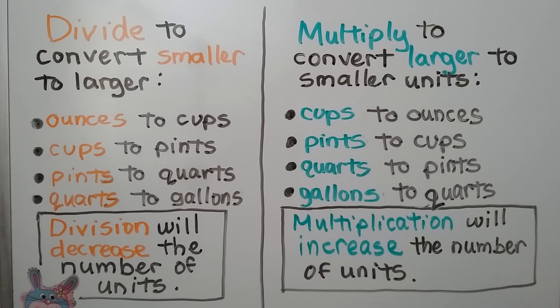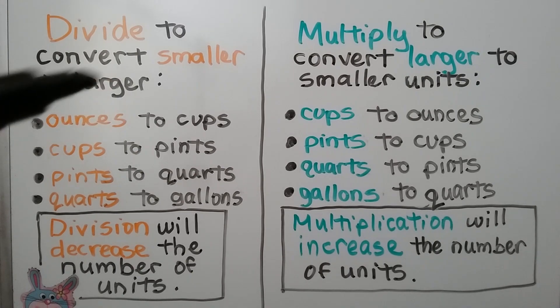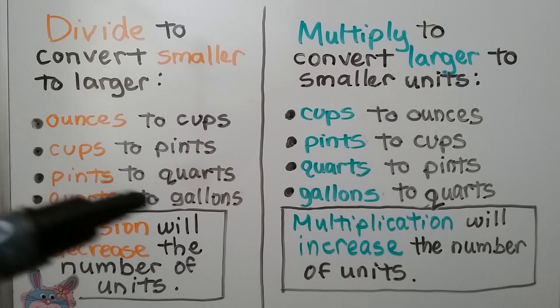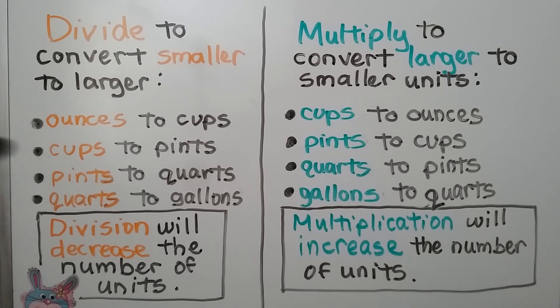We divide to convert smaller to larger units. Going from ounces to cups, cups to pints, pints to quarts, or quarts to gallons, we are going to divide.